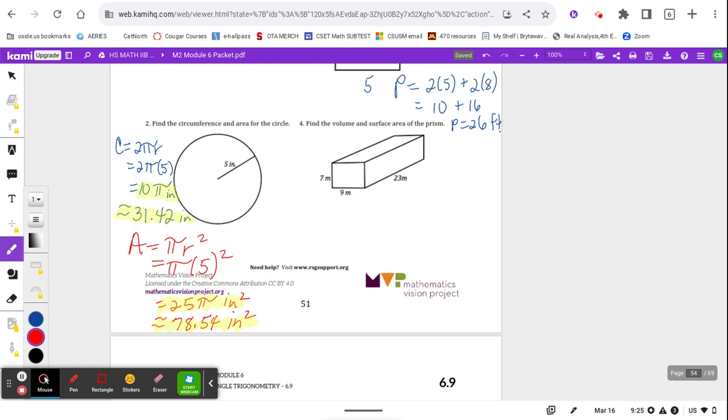Last but not least, we've got the volume and surface area of the prism. This happens to be a rectangular prism. Remember that volume is length times width times height. So we go 7 times 9 times 23, which is 63 times 23. Grabbing the calculator.